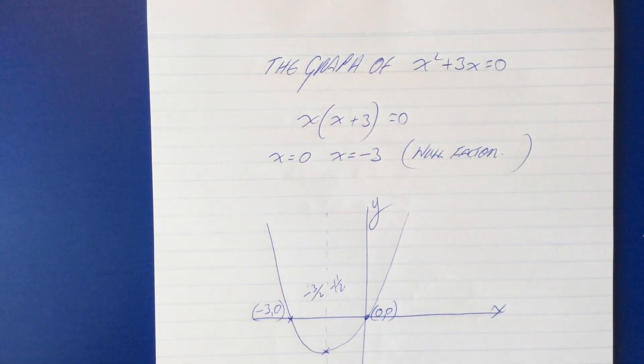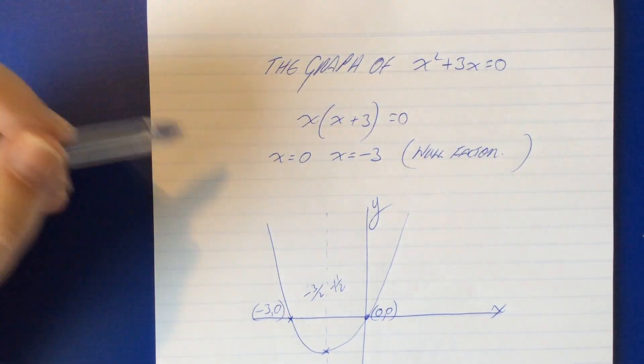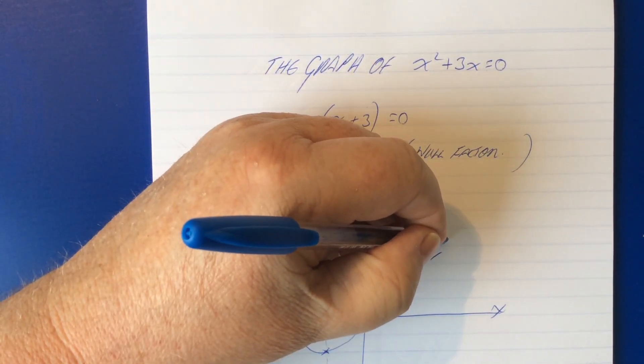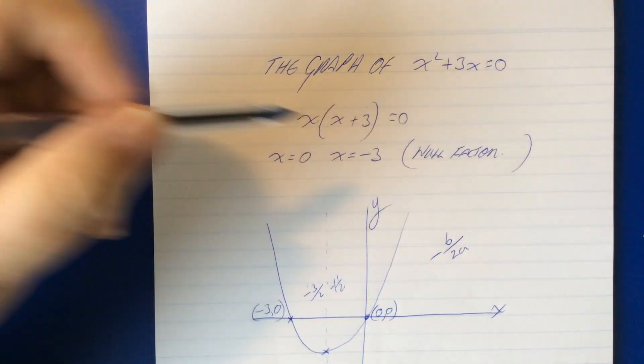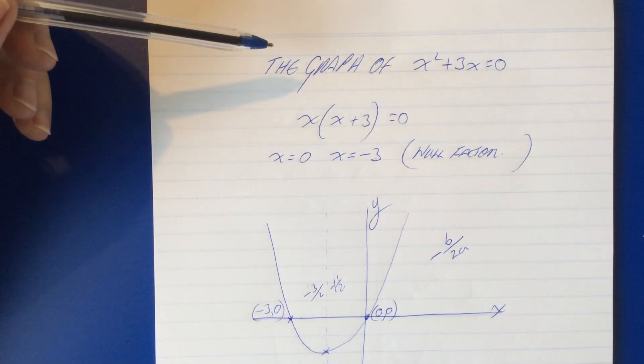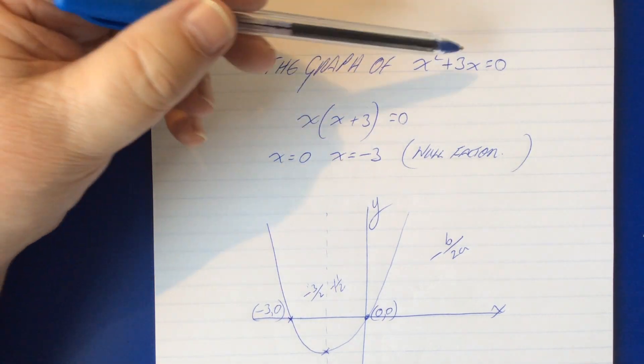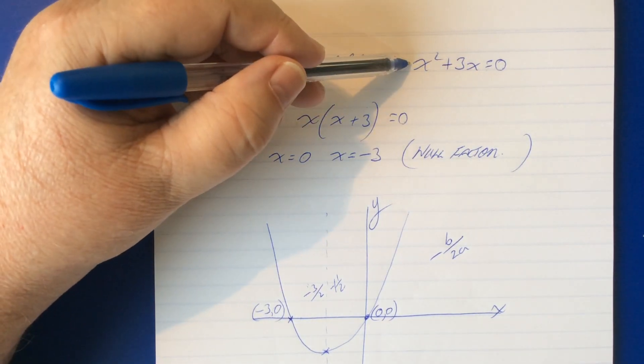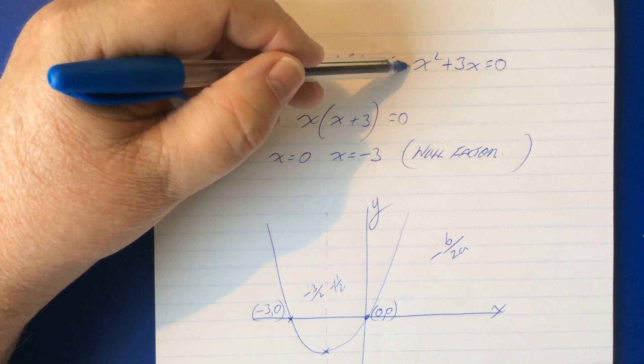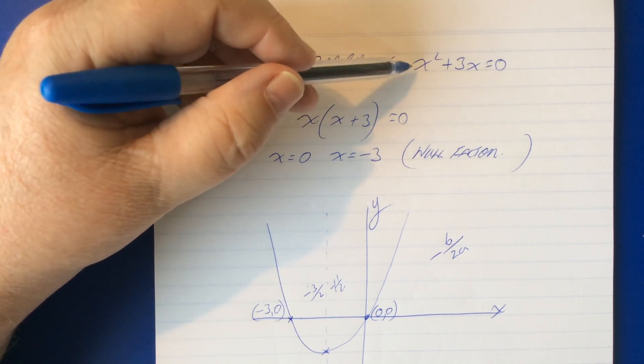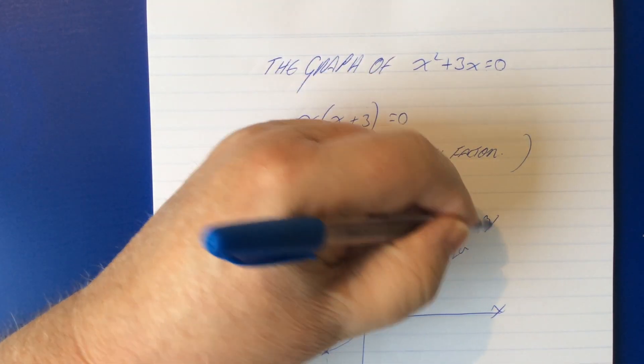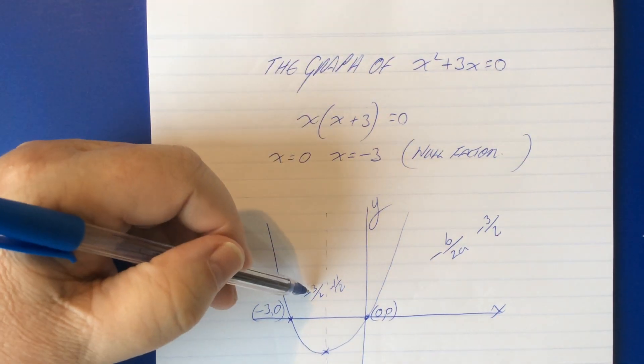Now we can just do that by inspection. Halfway between here and here is negative one and a half. We can apply this little formula negative b over 2a and when we do that this is b and the coefficient of this is one so that is and that is a so that gives us negative three over two times one which is two which gives us this.